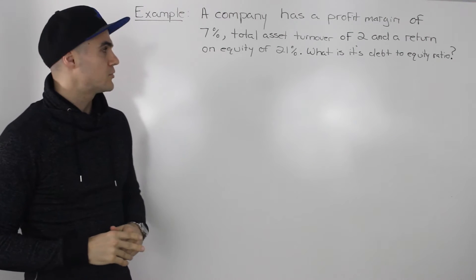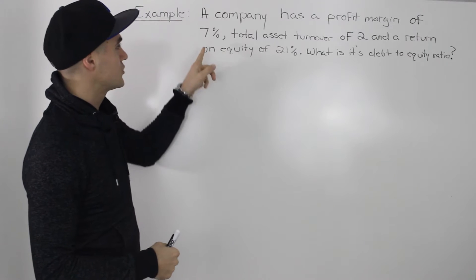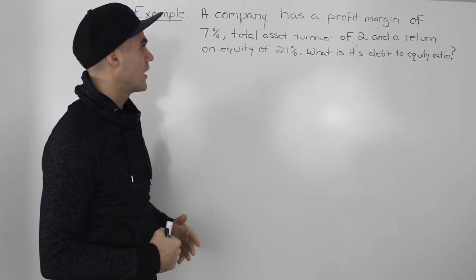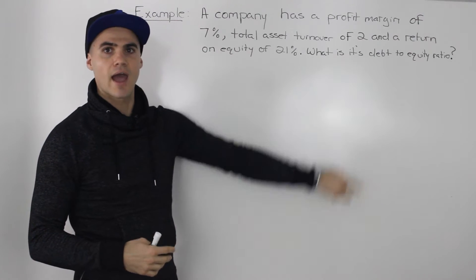In this video, we're going to do an example using the DuPont identity. So we have a company, and they have a profit margin of 7%, a total asset turnover of 2%, and a return on equity of 21%. And we have to calculate its debt-to-equity ratio.